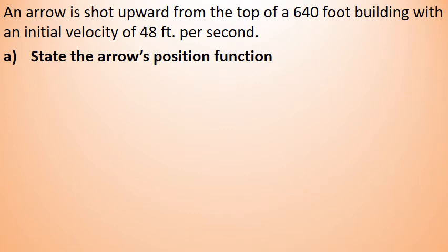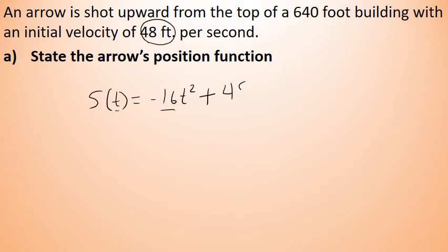Part A asks us to find the arrow's position function. The position function of a free-falling object under gravity takes the form s(t) = negative 16t squared. The coefficient of negative 16 is constant for any object falling under gravity, where the force of gravity is measured in feet per second squared. We add the initial velocity times t — here, positive 48 feet per second, since the arrow moves upward — plus the initial position of 640. So the position function is s(t) = negative 16t squared plus 48t plus 640.